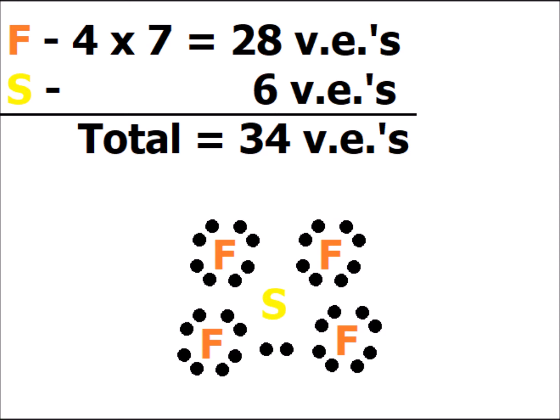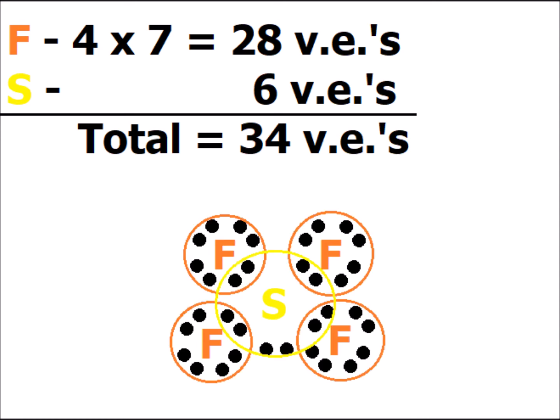Our next compound is sulfur tetrafluoride. Each fluorine has 7 valence electrons; sulfur, being in the same family as oxygen, has 6, so that gives us a total of 34 valence electrons for the molecule. We can satisfy the octet rule for each fluorine, and we can expand the octet to 10 electrons for the central sulfur atom, which is permissible because sulfur is in the third row of the periodic table.